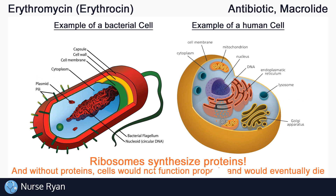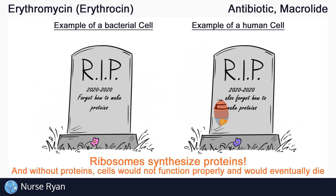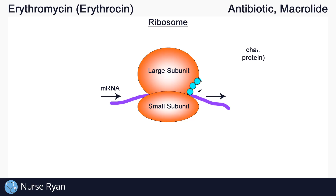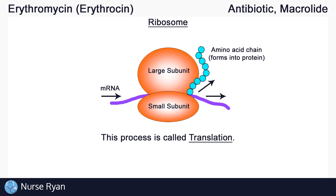So if for some reason the ribosomes stop functioning and stop synthesizing these proteins, the cells would not be able to function and they would eventually die off. All ribosomes are made up of subunits. Each ribosome has a large subunit and a small subunit that are both required to synthesize proteins. These subunits work together to first read information that comes in on messenger RNA or mRNA, then use that information to create amino acid chains, which eventually form into proteins. This process is called translation.